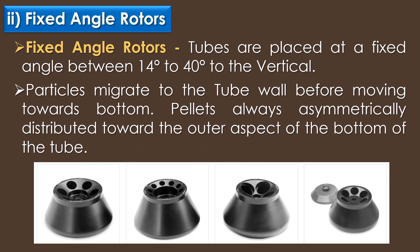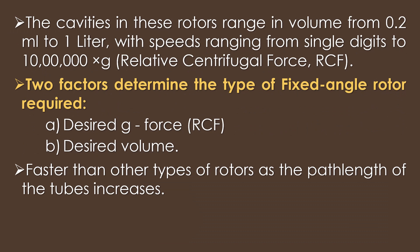The second type of rotor is fifth set angle rotors. Fifth set angle rotors are the most ubiquitous rotors used in centrifugation. In fifth set angle rotors, the tubes are placed at a fifth set angle between 14 degrees to 40 degrees to the vertical. In this rotor, particles migrate to the tube wall before moving towards the bottom. Pellets are always asymmetrically distributed towards the outer aspect of the bottom of the tube. The cavities in these rotors range in volume from 0.2 ml to 1 litre, with speeds ranging from single digits to 10 lakh relative centrifugal force.